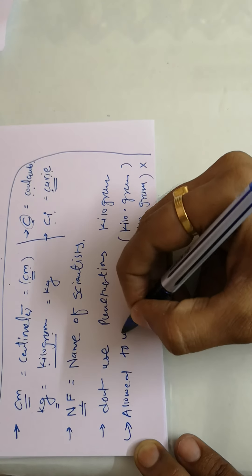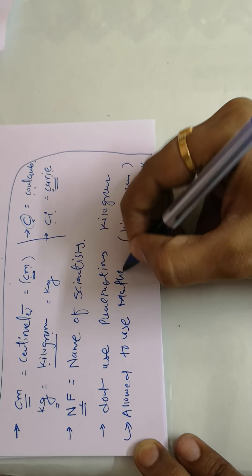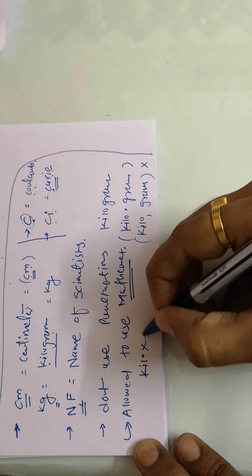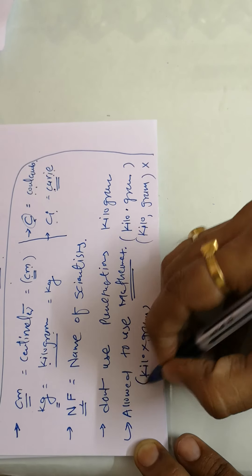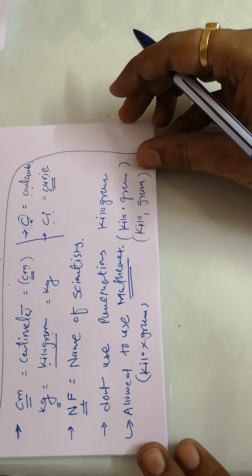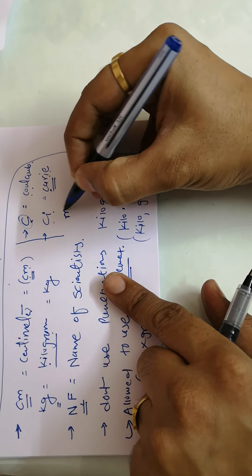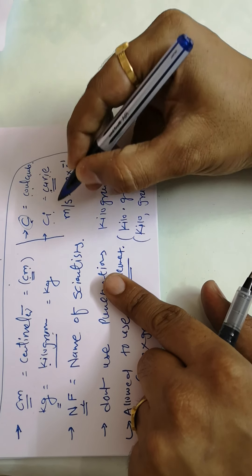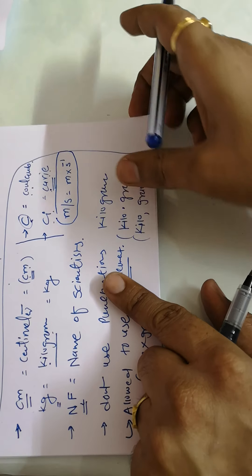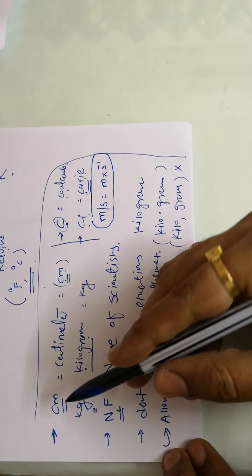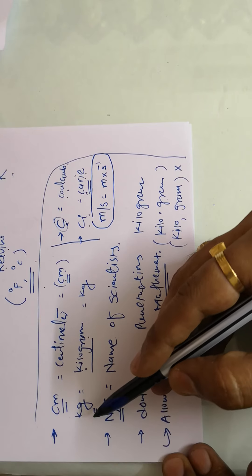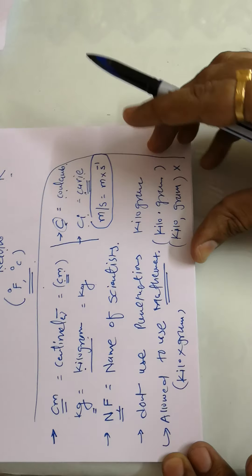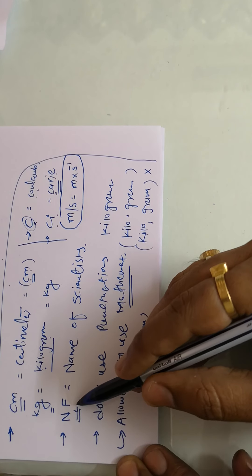You are allowed to use mathematical operations within units. For example, 'kilo multiplied by gram' is allowed. Instead of writing 'meter per second', you can write 's⁻¹' (second raised to minus one) — that is truly allowed. So whenever you are using units, be careful: the fundamental rule is to use small (lowercase) alphabets.